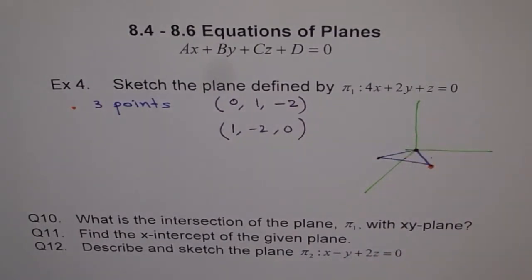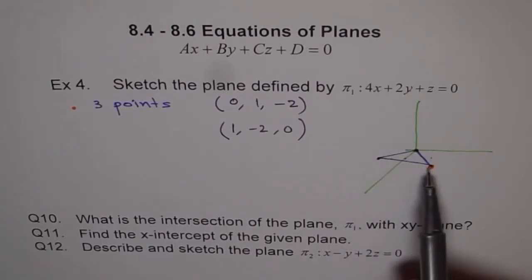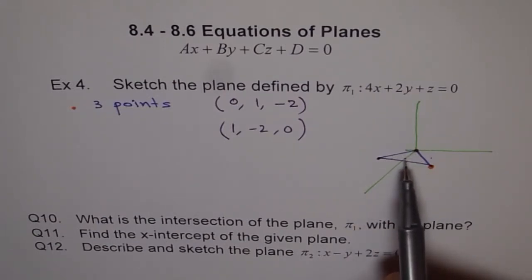So, whenever you have an equation of a plane where all the three variables are there and the third constant, D is 0. So, in that case, origin is within the plane and you can find a set of three points and join them. That triangle kind of represents a plane. Okay?